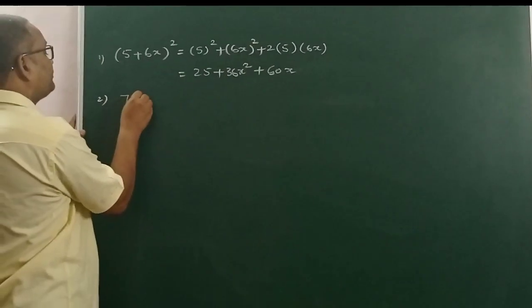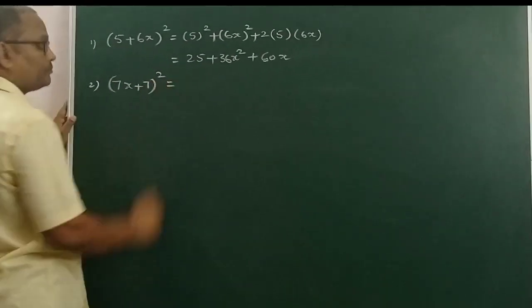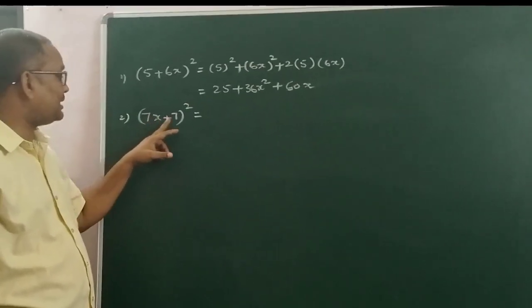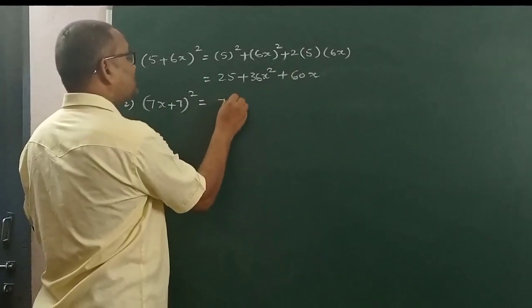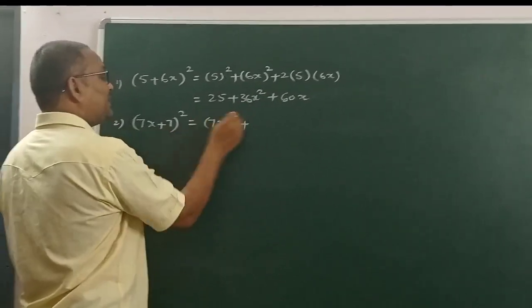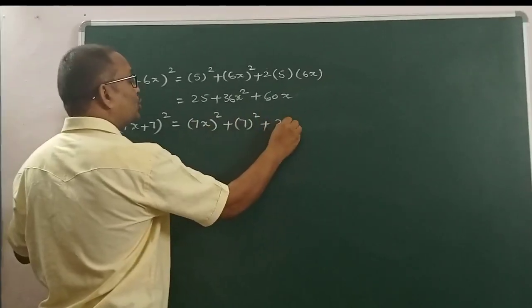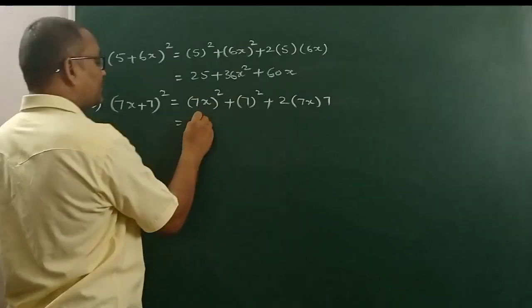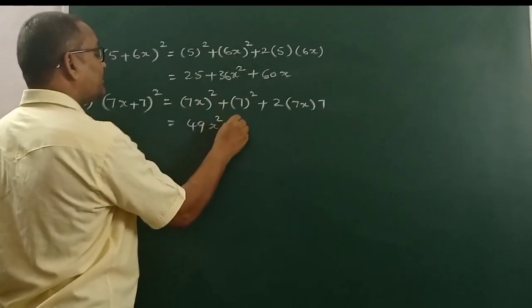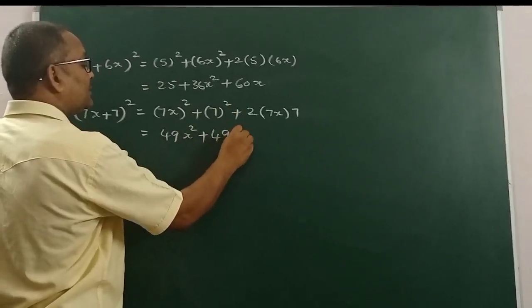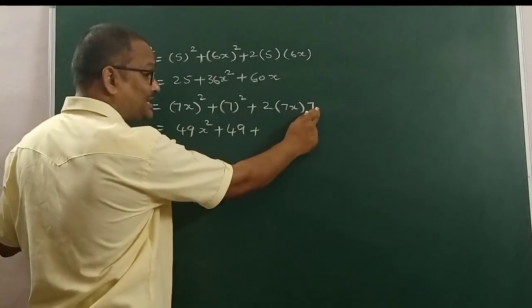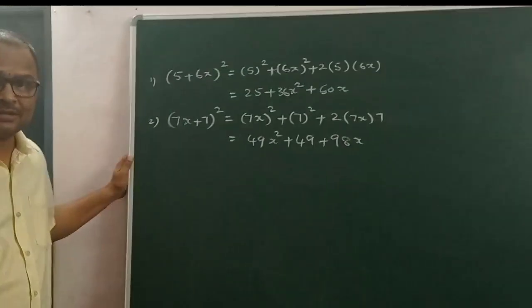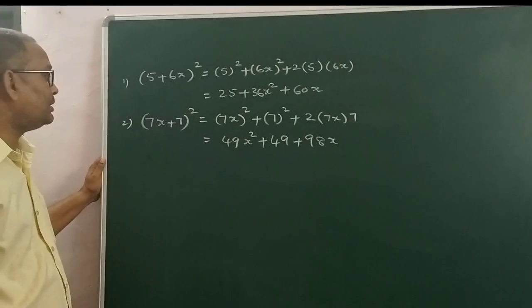Next: 7X plus 7 whole square. This is also in the form of A plus B whole square. Here, A is equal to 7X and B is 7. Therefore, A square is 7X whole square, plus B square is 7 whole square, plus 2AB is 2 into 7X into 7. That equals 49X square plus 49 plus 98X. This is the expansion of 7X plus 7 whole square.